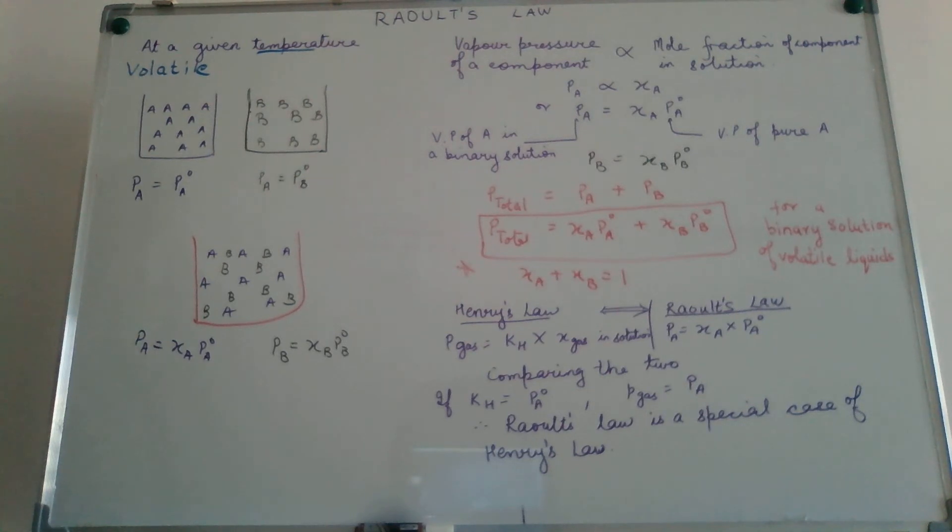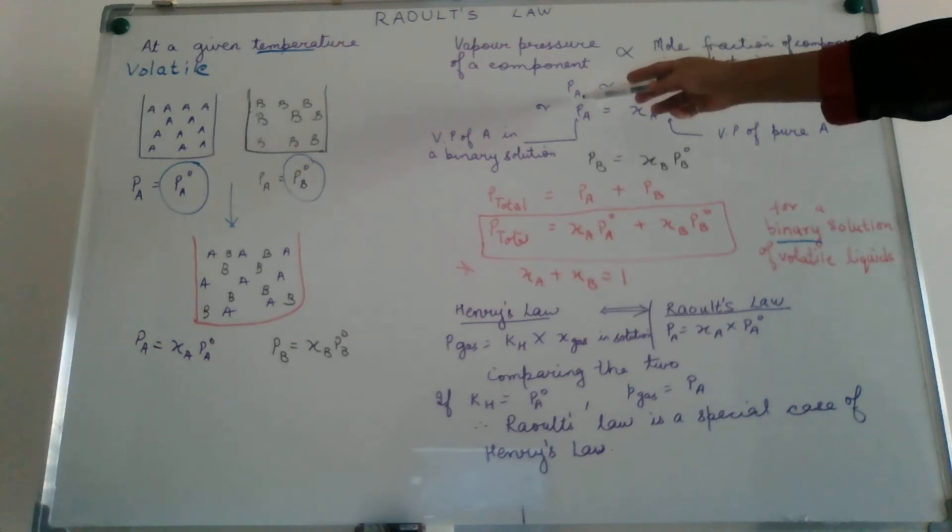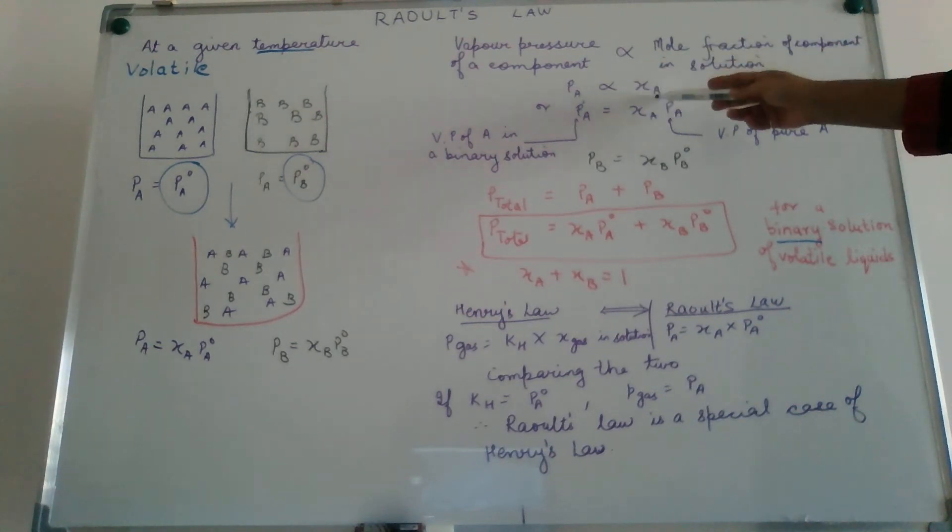Raoult's law talks about the vapor pressure of each of the components when two liquids are mixed with each other. In other words, we are talking about a binary solution, a solution made up of two liquids A and B. Here PA0 and PB0 are the vapor pressure of pure A and vapor pressure of pure B. Raoult's law says that in a binary solution of volatile liquids, the vapor pressure of any component is directly proportional to the mole fraction of that component in solution.